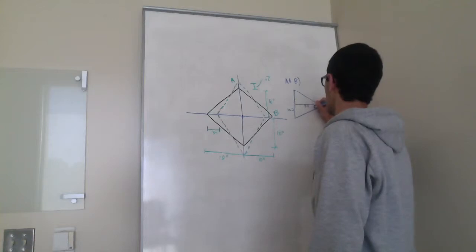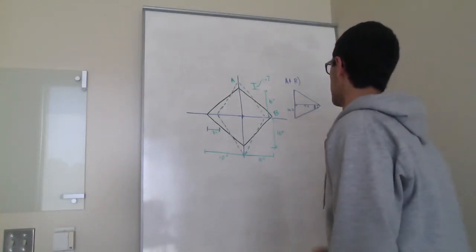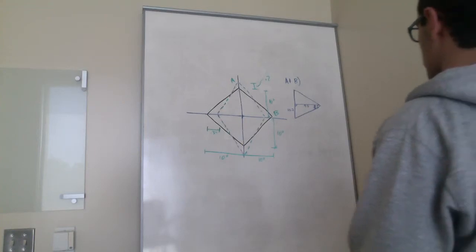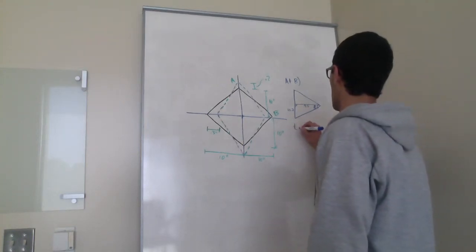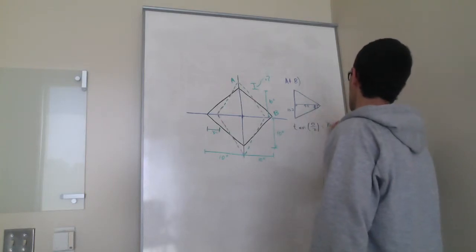It's going to be theta over 2. So we'll have tangent theta over 2 equals 10.2 over 9.7.